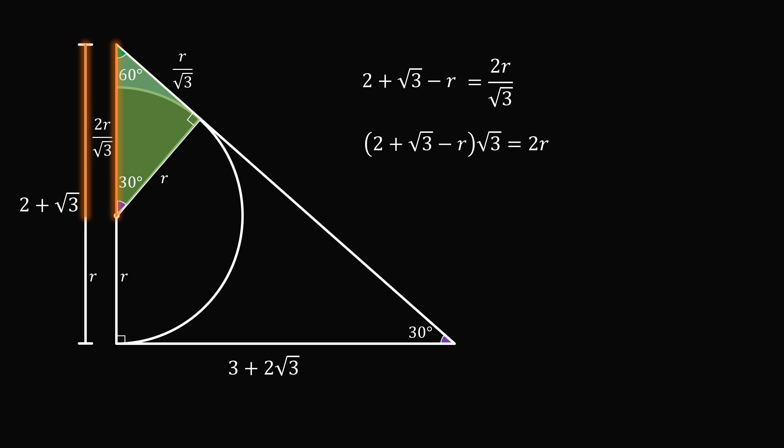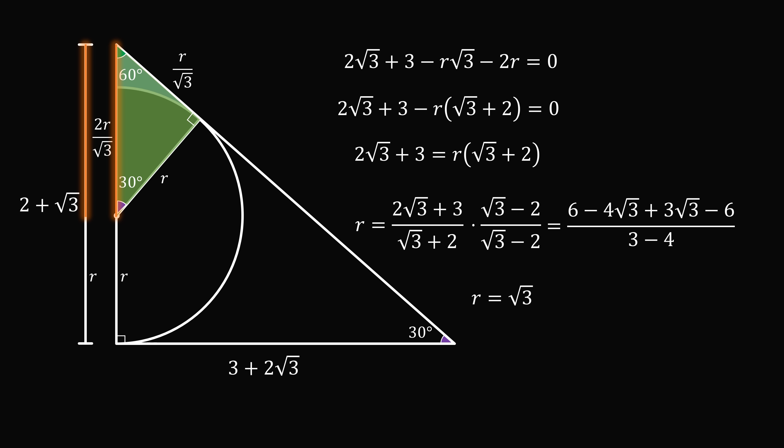Multiply both sides of the equation by root 3, distribute through, then let's bring everything to the left-hand side of the equation. From here, we will factor out an r. Bring the r term to the right-hand side of the equation, and divide through by root 3 plus 2. All that remains is to simplify this fraction. Multiply the numerator and the denominator by the conjugate of the denominator. So this will be root 3 minus 2. We then just simplify. And this will all work out magically so that r is equal to root 3.